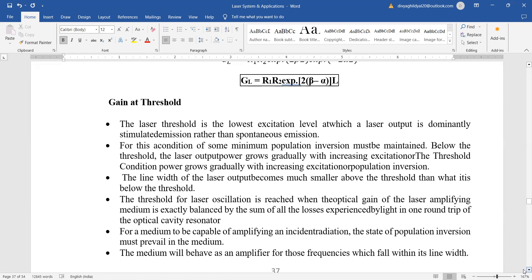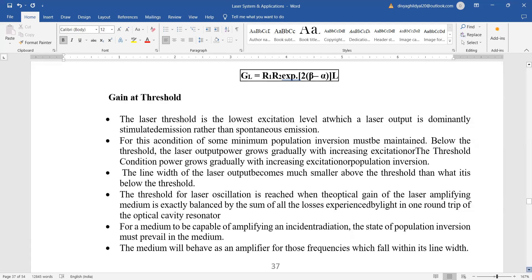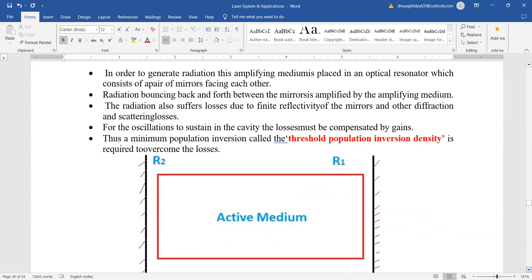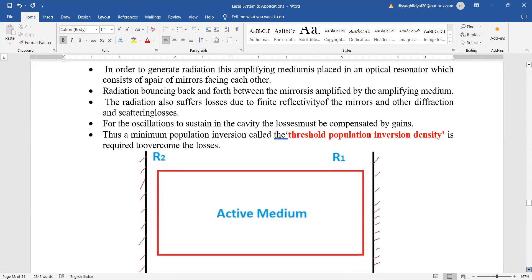Gain at threshold. The laser threshold is the lowest excitation level at which a laser output is dominantly stimulated emission rather than spontaneous emission. For this, condition of minimum population inversion must be maintained. The threshold condition power grows gradually with increasing excitation or population inversion. The medium will behave as an amplifier.